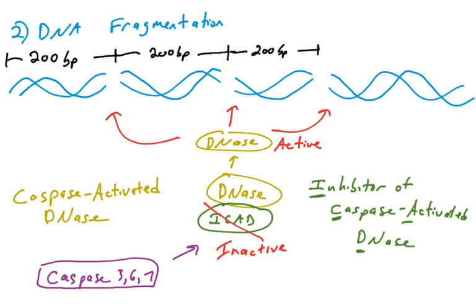That's another way where the executioner caspases help destroy the cell. In this way, we're destroying the DNA of the cell.